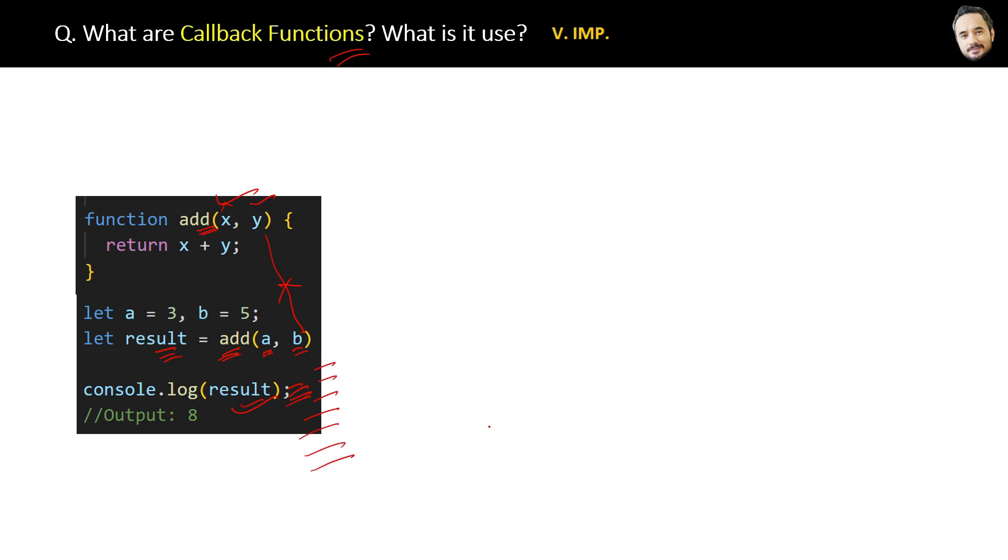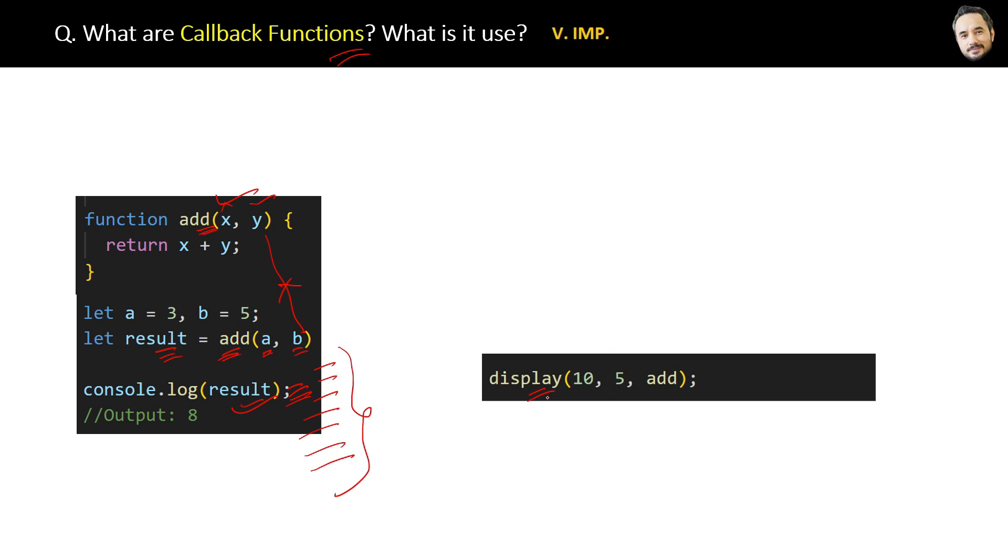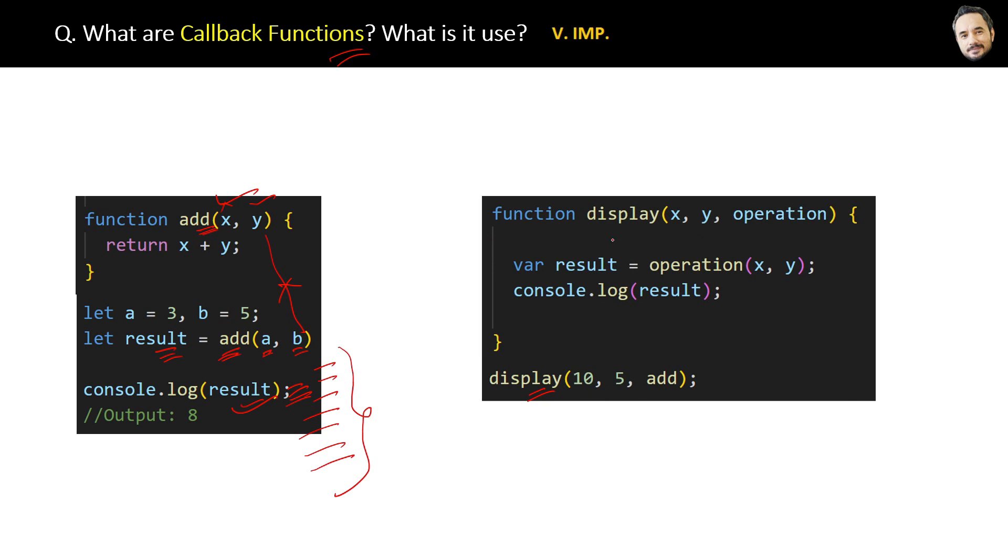Then it's better we put all those lines of code in a single method display like this and call it like this. Here we will put the complete code of the display method. You already know x and y are the parameters, but what is the operation here?